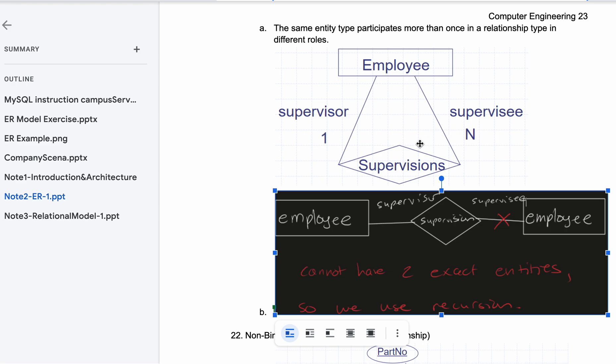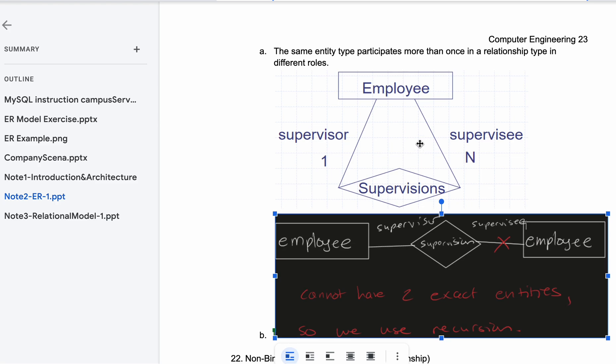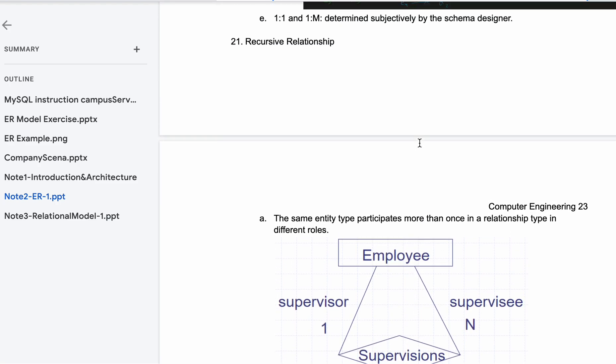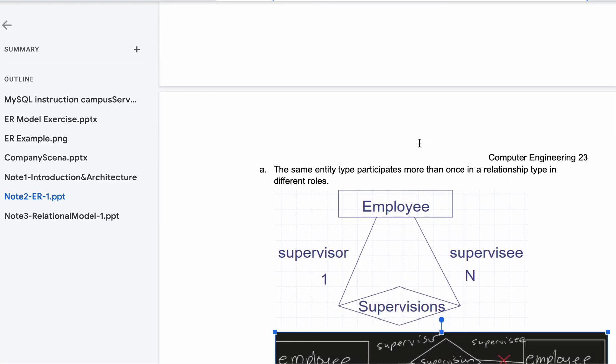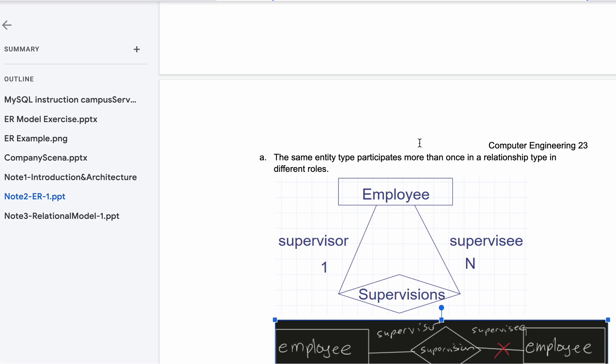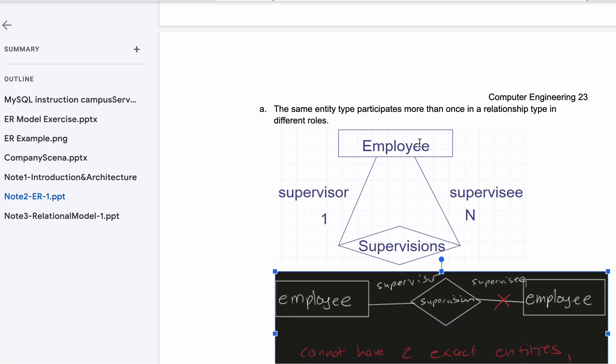We can't have the employee entity twice, so we just have it once, and then we have these two lines going to the same relationship. That's going to be our recursive relationship because we're recursively relating to the same thing. So that is what that is.